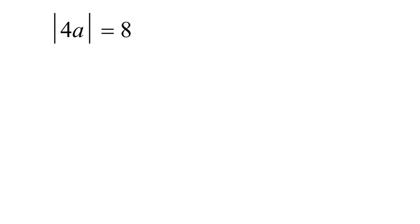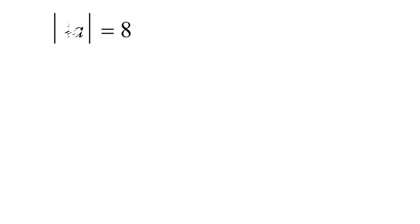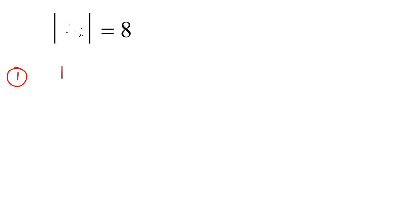Here is a Type 1 question. Can you see that the absolute value is already by itself? That's the first step — always make sure the absolute value is by itself. Now, you're going to completely ignore what's inside there. What I want you to think about instead is: what number could you put inside here so that when you get the absolute value, it gives you an 8? Well, you could put an 8 inside — the absolute value of 8 is 8.